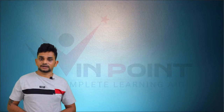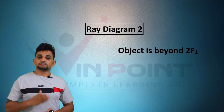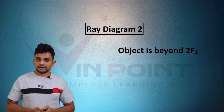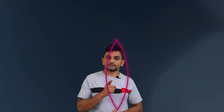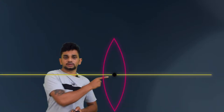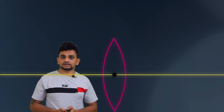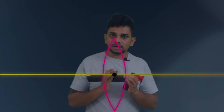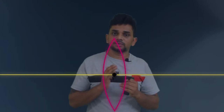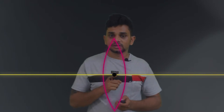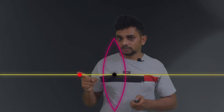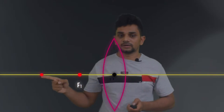Now we go to ray diagram number two — the object is beyond 2F1. We are going to draw the ray diagram. It is a convex lens. We are marking the optic center O, the principal axis, and measuring the distances. Taking 2 centimeter intervals, we are marking F1 and then 2F1.